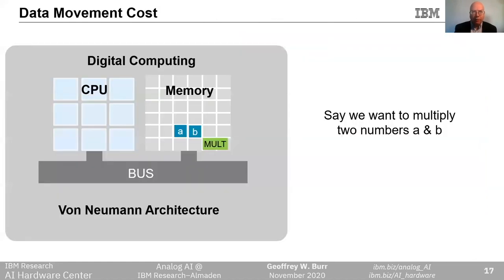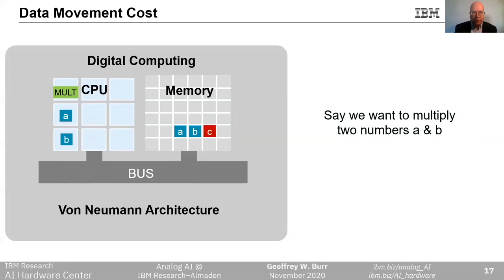In the conventional von Neumann architecture, computation in the central processing unit requires data to come across the bus from memory. Say we want to multiply two numbers A and B: first we send the data bits associated with the operation, then we send the operands. Once the result is available within the CPU, we need to send it back across the bus to be stored into memory. This bus causes us to expend a lot of energy, especially if a lot of data has to move a long distance. Fortunately, one interesting thing about deep learning is that we can often reduce the numerical precision of the computations and yet still see the same neural network accuracy.